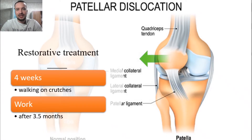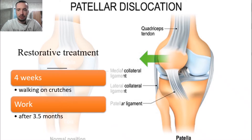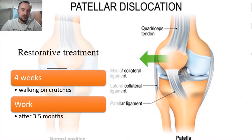After the immobilization is eliminated, restorative treatment is prescribed, but load on the limb is not allowed for another four weeks. You can start walking on crutches, and begin walking independently at three and a half months.